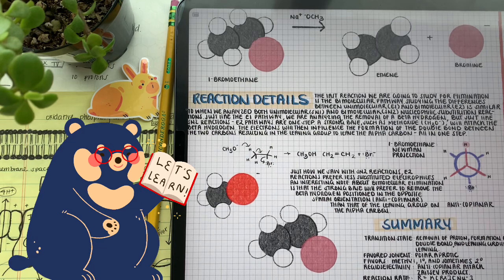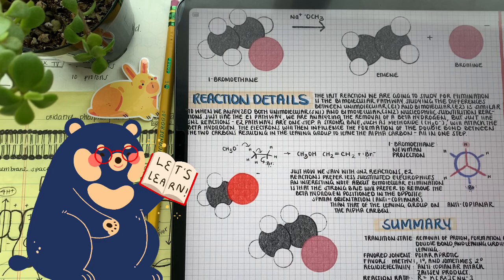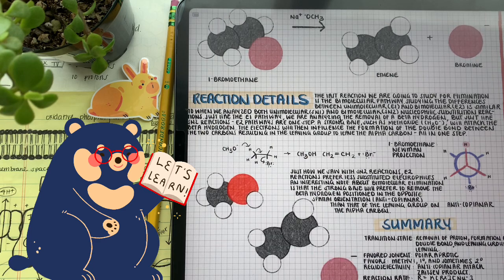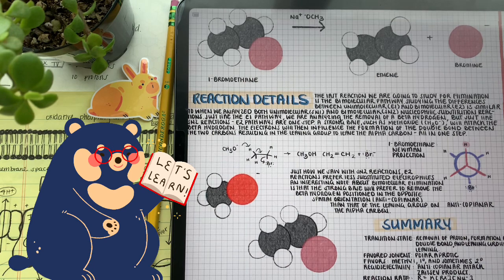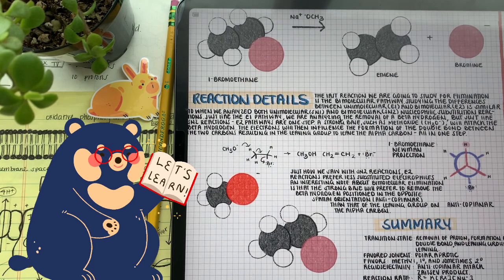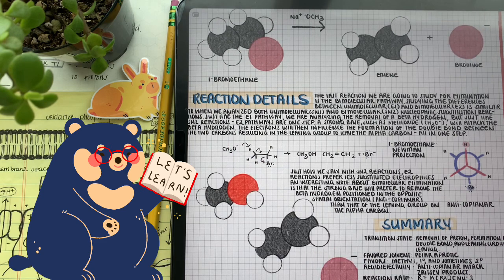E2 pathways favor primary carbons and rarely secondary carbons. Because of this, it's not going to be like the E1 pathway where we had two products. E2 products usually are just one. So we don't have the issue about what's the major or the minor products when it comes to E2 pathways.